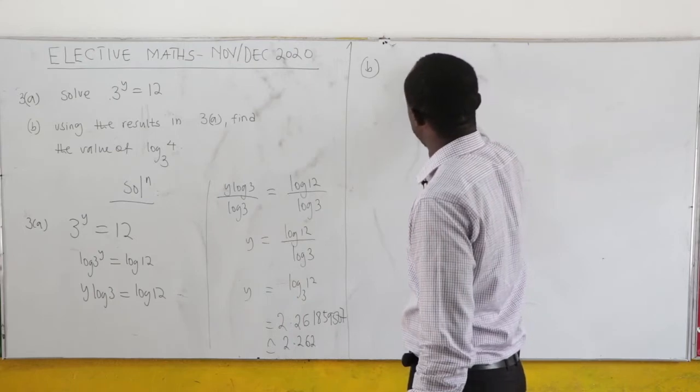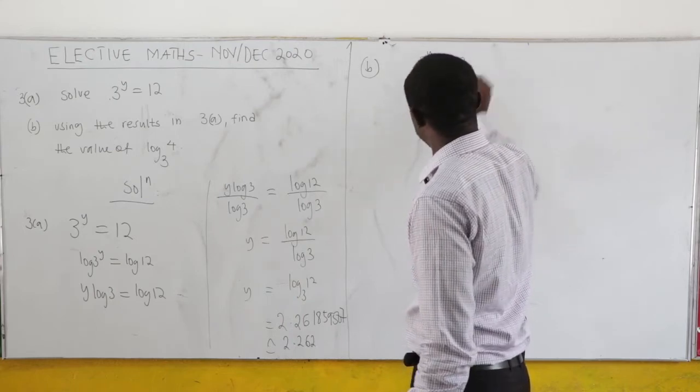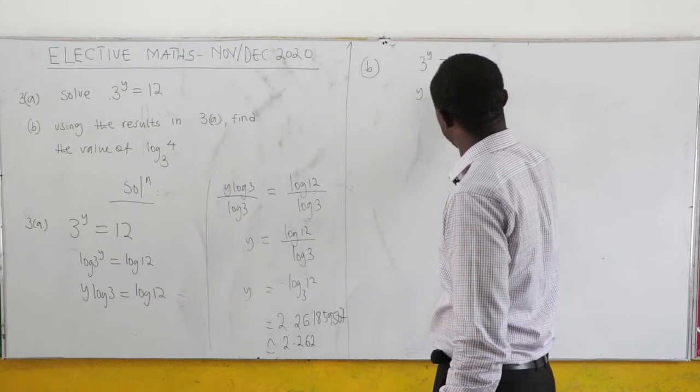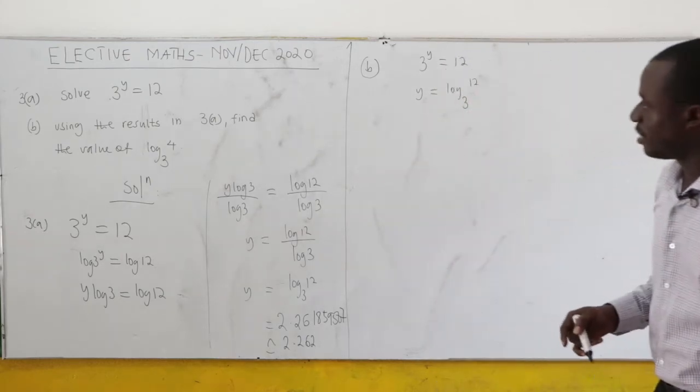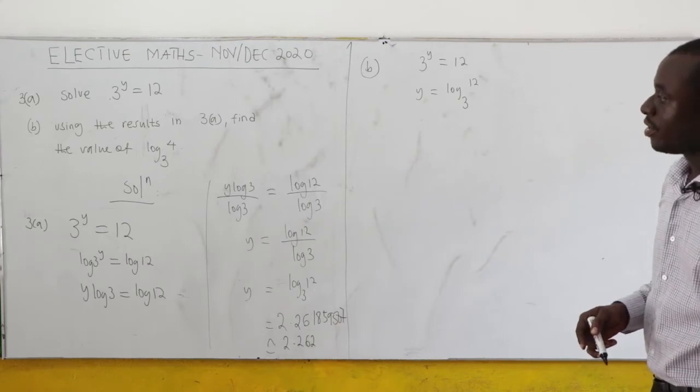Now, from the first one, we have 3^y equals 12. So we said that our y is the same as log₃12. So using this, how can you find log₃4?